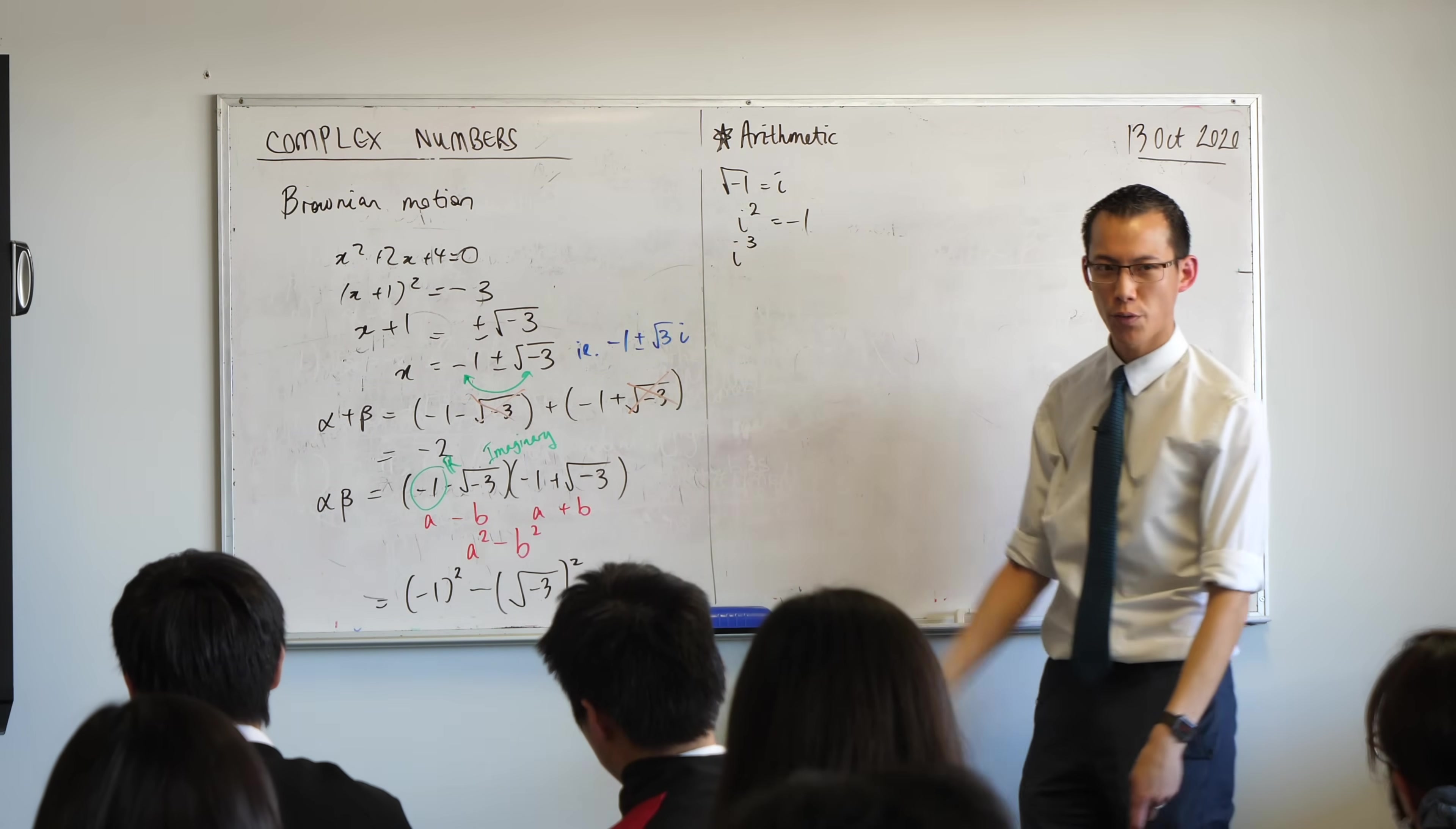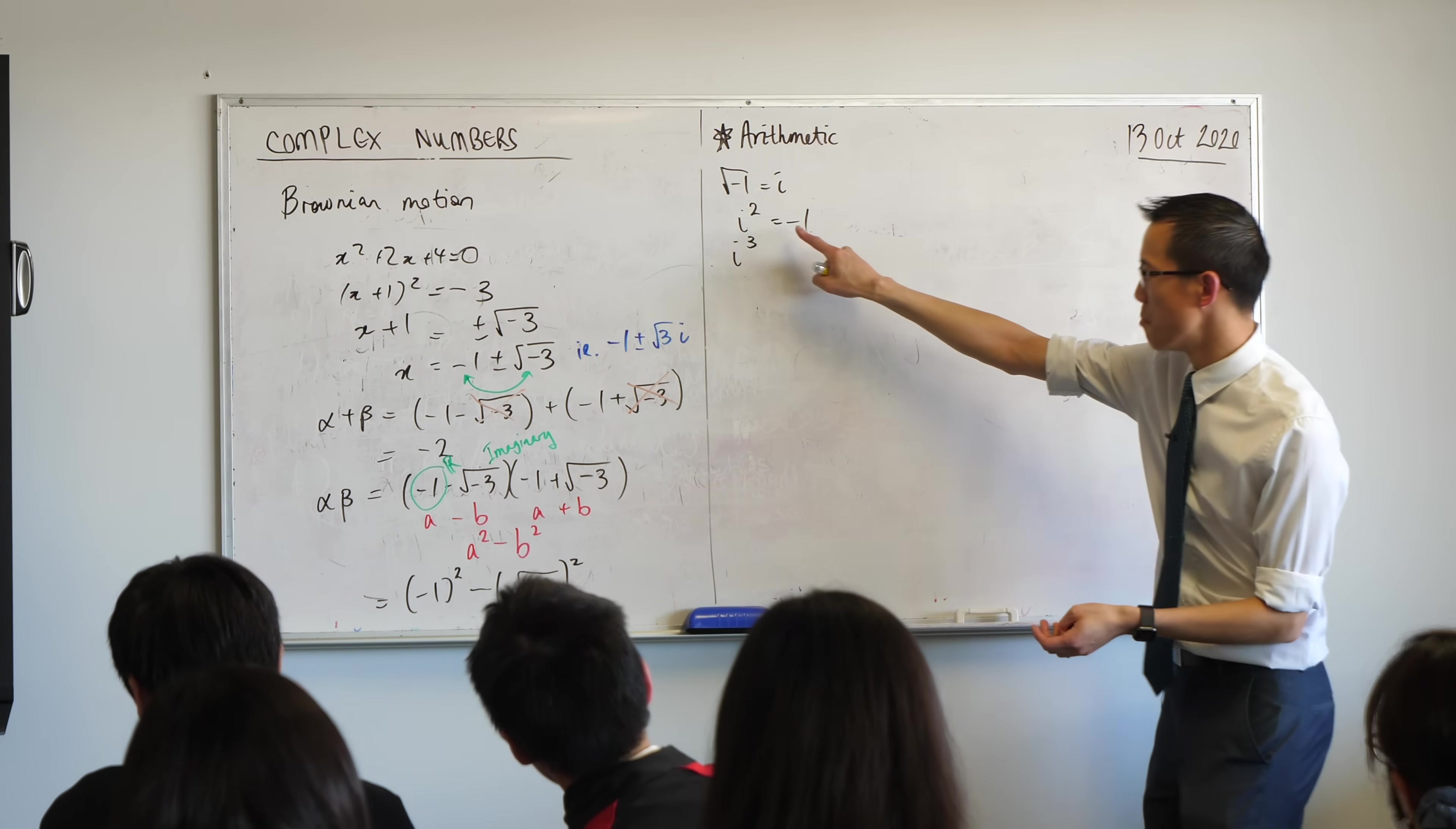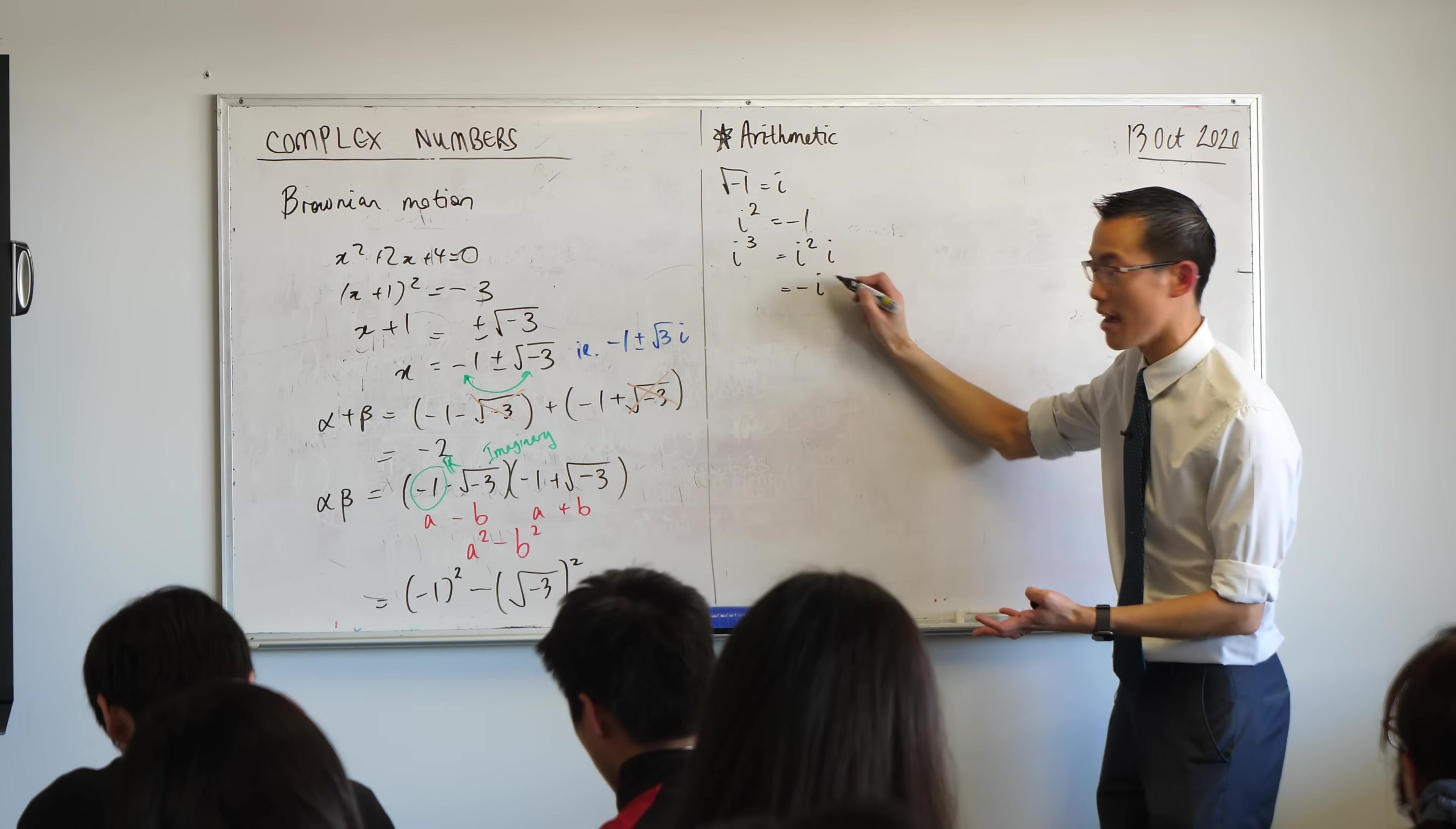What happens if I do it again? What if I multiply by i another time? Negative i. Well, yeah, it's minus 1, right? That's i squared times i again. So that's negative i. Is that okay?